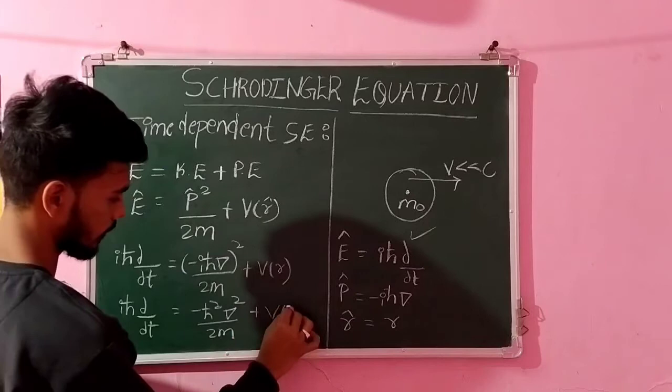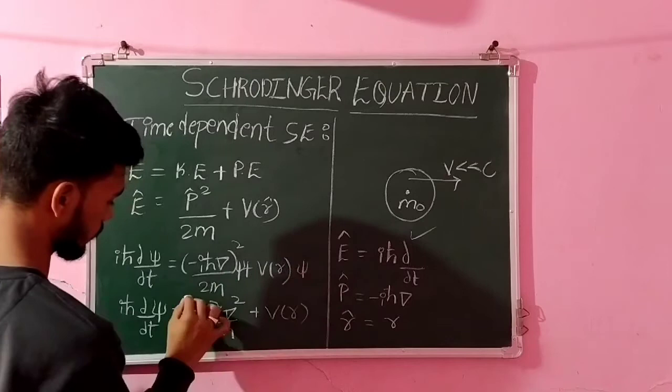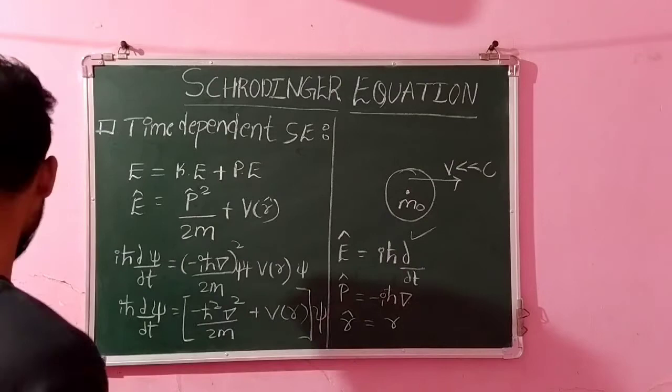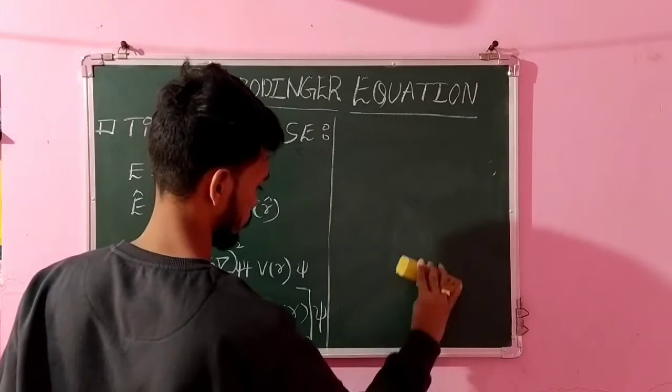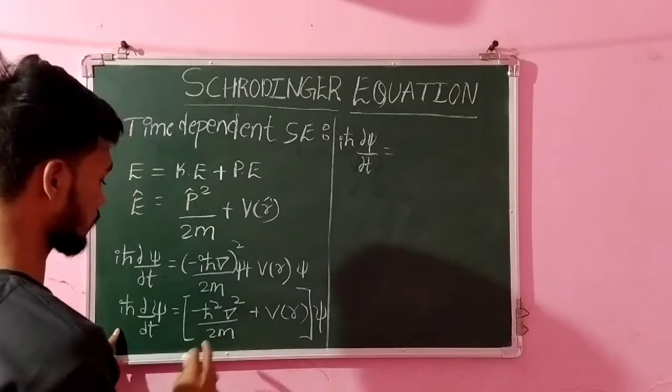So whenever you will be expressing the operators, you have to introduce psi. So just take it down here. I will get this equation. So we can write this equation as, this term can be termed as Hamiltonian.